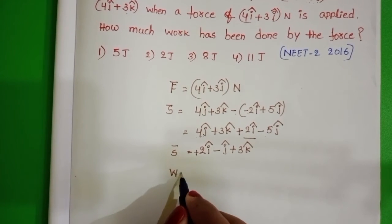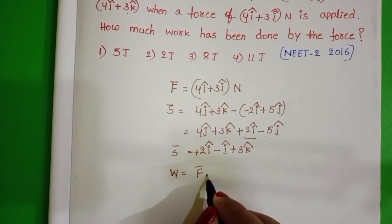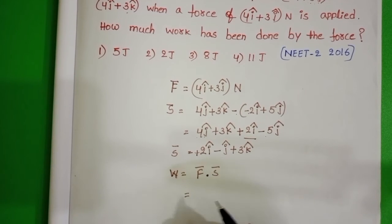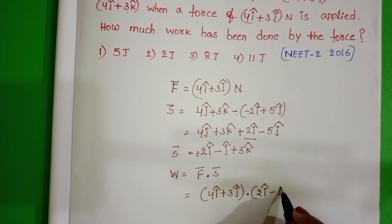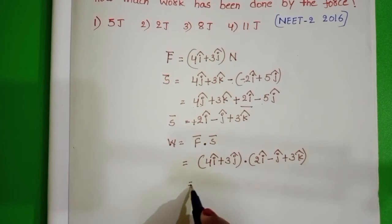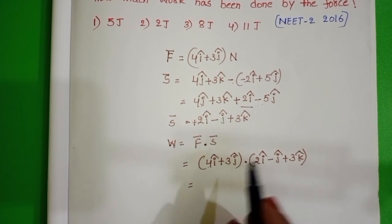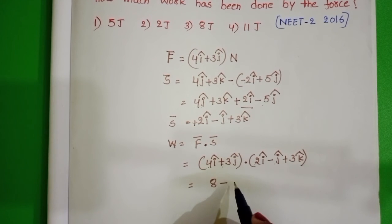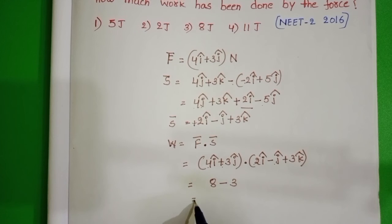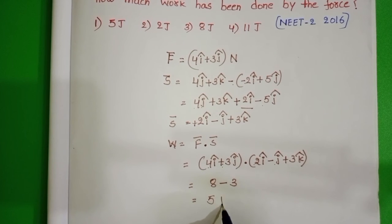Work done = F⃗ · S⃗. Do the dot product. 4î + 3ĵ into 2î - ĵ + 3k̂. That equals 8 - 3 = 5 joules.